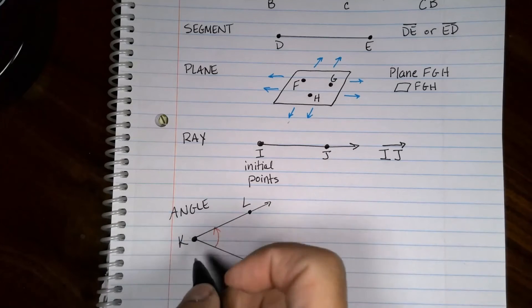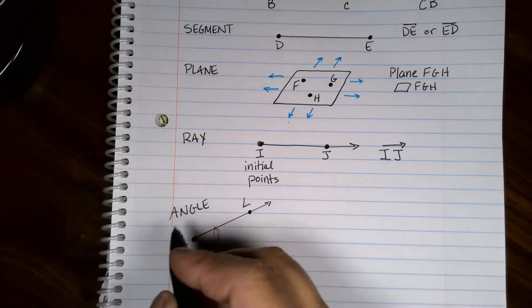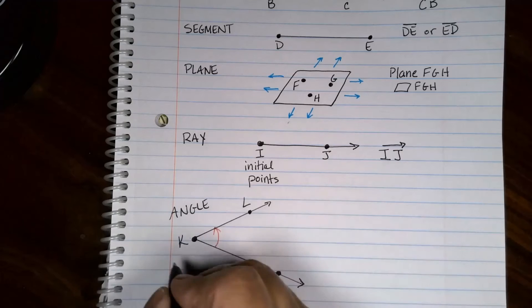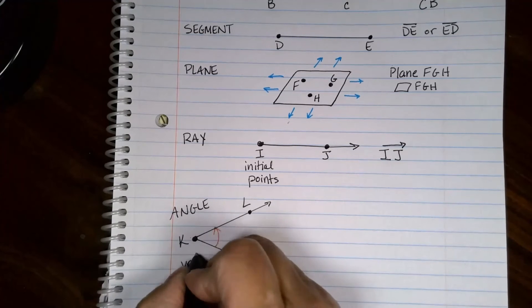The point right here is very interesting. Since it's the initial point for both, on an angle it has a different name. It's called a vertex. That's the vertex of the angle.